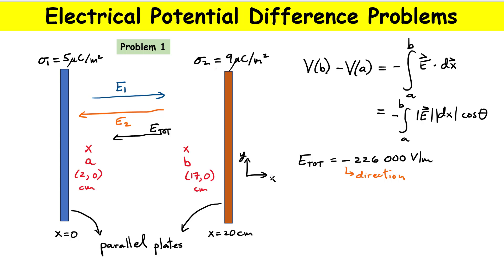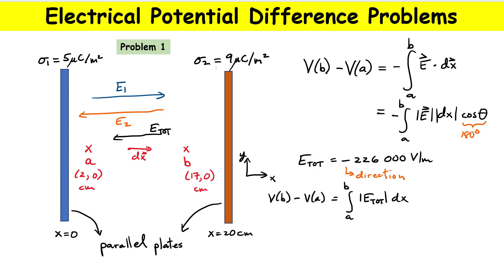Going back to our expression, I substitute the magnitude of the electric field and consider the angle theta — the angle between both vectors. E total points to the left, and the displacement going from A toward B points to the right, so the angle is 180 degrees. Cosine of 180 degrees equals minus one, which cancels the negative sign out front. So VB minus VA equals the magnitude of E total integrated from A to B. Since E total is constant, it factors out, leaving E total times the quantity (xB minus xA).